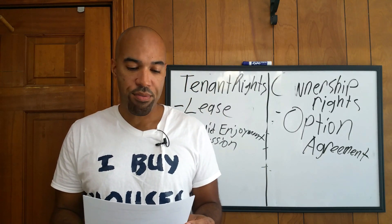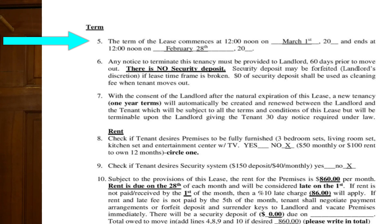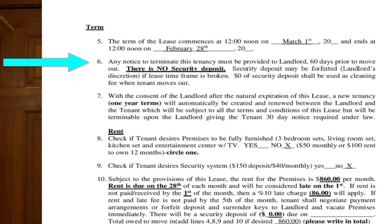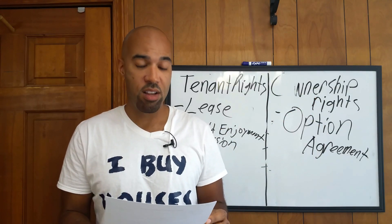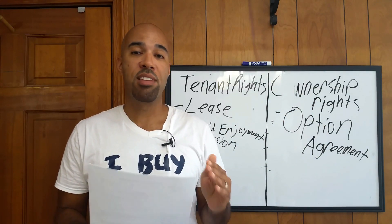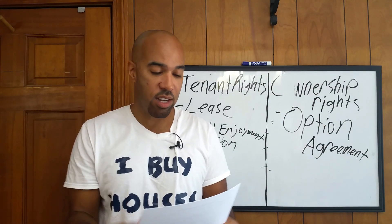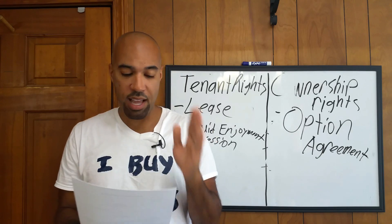Number five: the term of this lease starts noon this day, ends at noon — I'll do a year lease. Number six: any notice to terminate this tenancy must be provided to the landlord 60 days prior to move out. I want 60-day notice if you're moving out of my house, so I can get my new tenant buyer lined up.